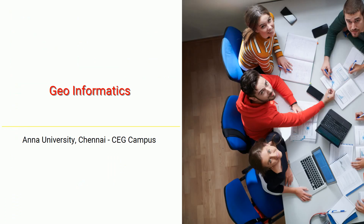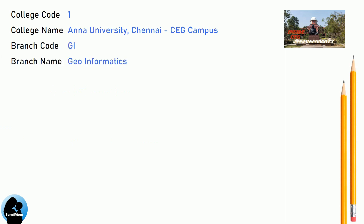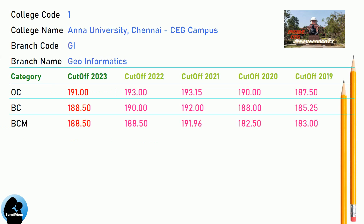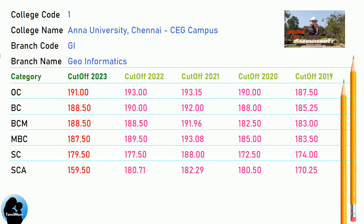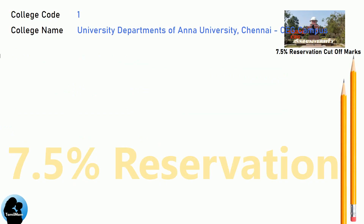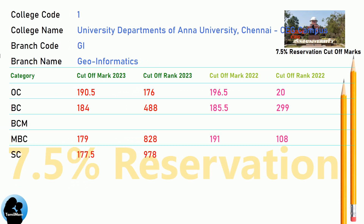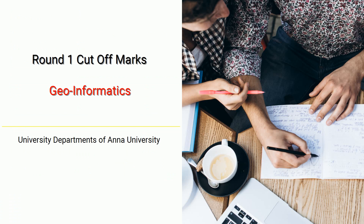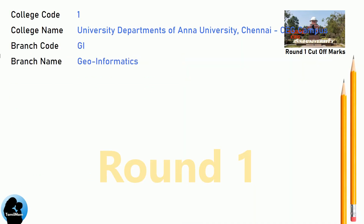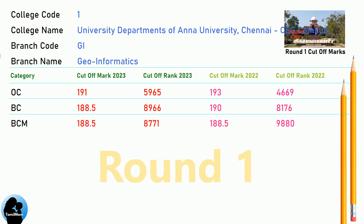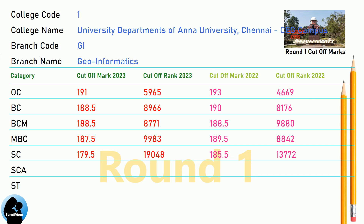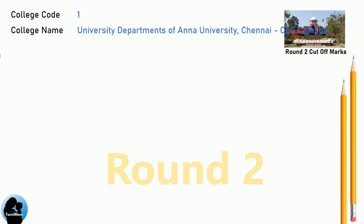DNA Cut-Off for Anna University Chennai CEG Campus in Geoinformatics. DNA 7.5 Reservation Cut-Off for Anna University Chennai CEG Campus in Geoinformatics. DNA Round 2 Cut-Off for Anna University Chennai CEG Campus in Geoinformatics.